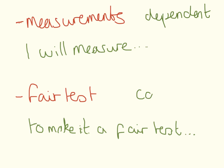For the fair test section, they are looking for your control variables — what things are you keeping the same. You could say something like: 'To make it a fair test, I will keep [X], [Y] and [Z] the same. These are my control variables.' You need to make it really clear to the examiner that you can identify the independent, the dependent and the control variables.